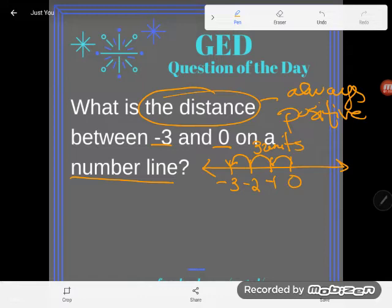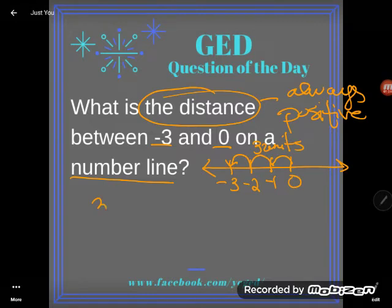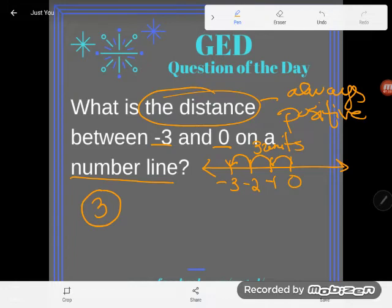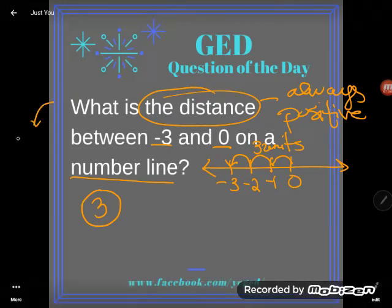And so if I ask you about distance, your answer is going to be positive. So what is the distance between negative three and zero on a number line? It's just three. Now this relates to a super duper important concept that almost always comes up in the first five. And that is the concept of absolute value bar. Absolute value.